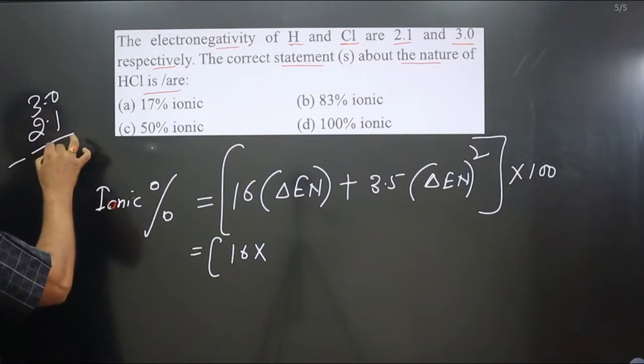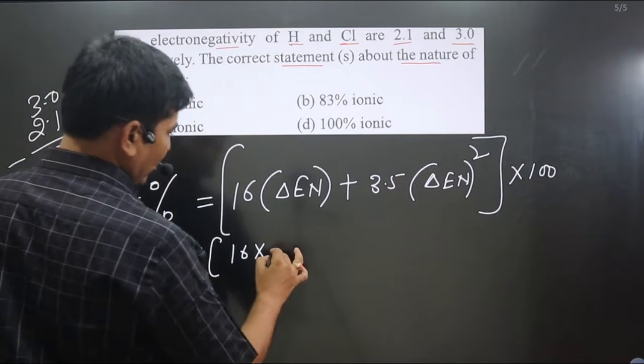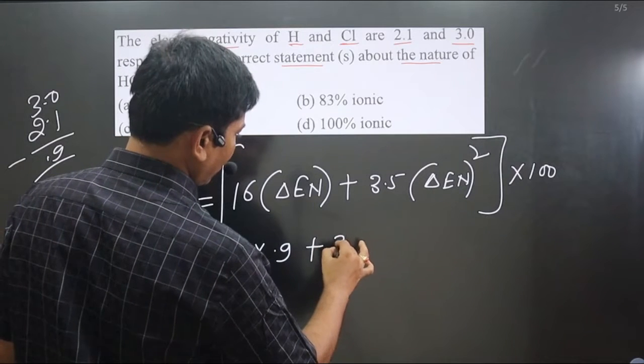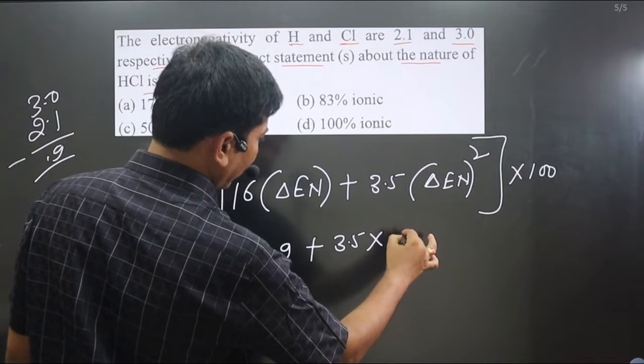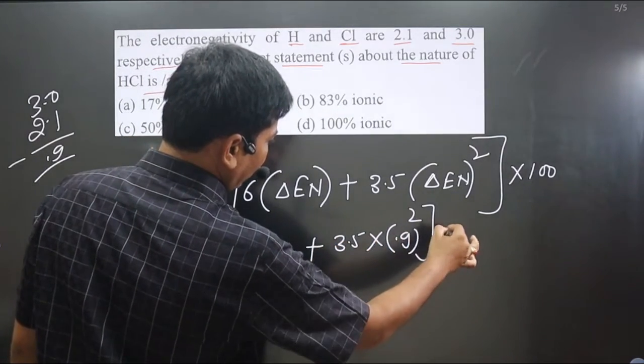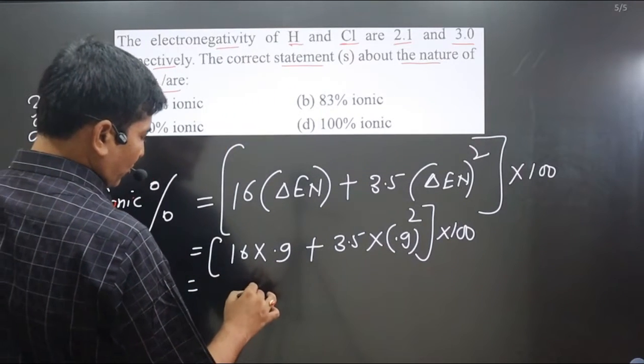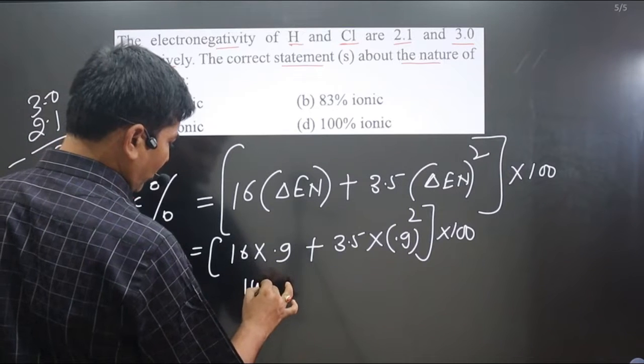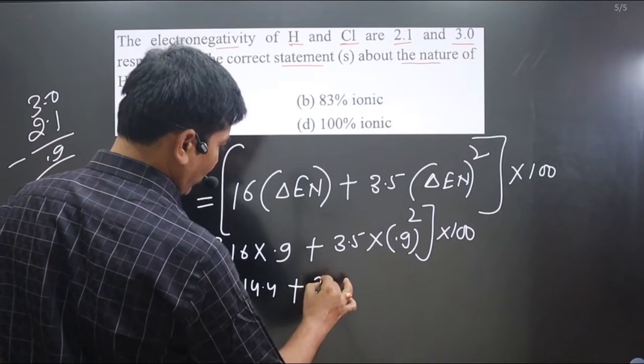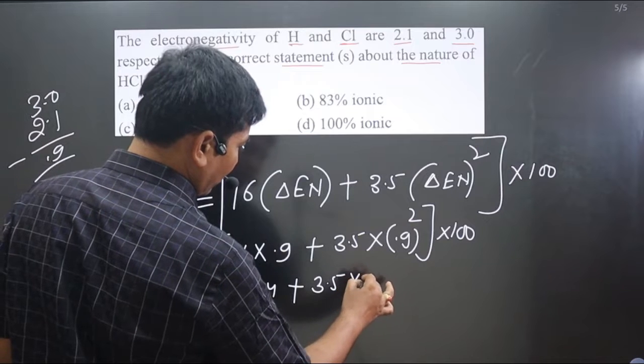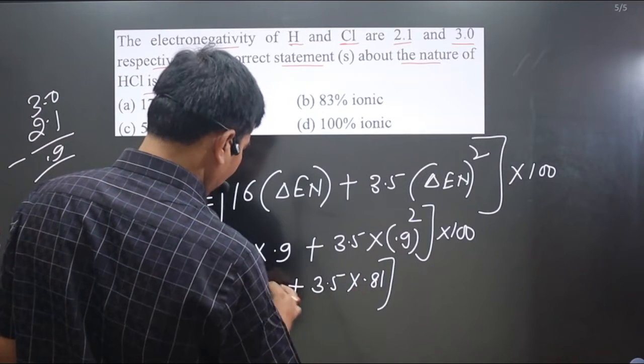The difference in electronegativity is 3.0 minus 2.1, which equals 0.9. So we have 16 times 0.9, plus 3.5 times 0.9 squared, all multiplied by 100. Simplifying: 16 times 9 is 144, so we get 14.4, plus 3.5 times 9 times 0.81.